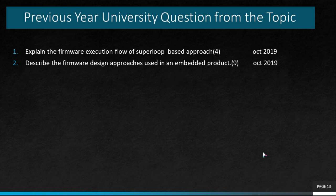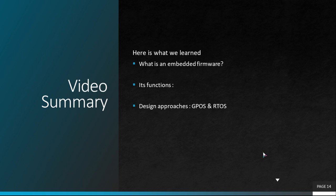Now looking at previous year university exam questions: the first question asked was 'Explain the firmware execution of the super loop based approach,' worth four marks, asked in October 2019. The second question was 'Describe the firmware design approaches used in embedded products,' covering both super loop and embedded OS based approaches, worth nine marks, also asked in October 2019.